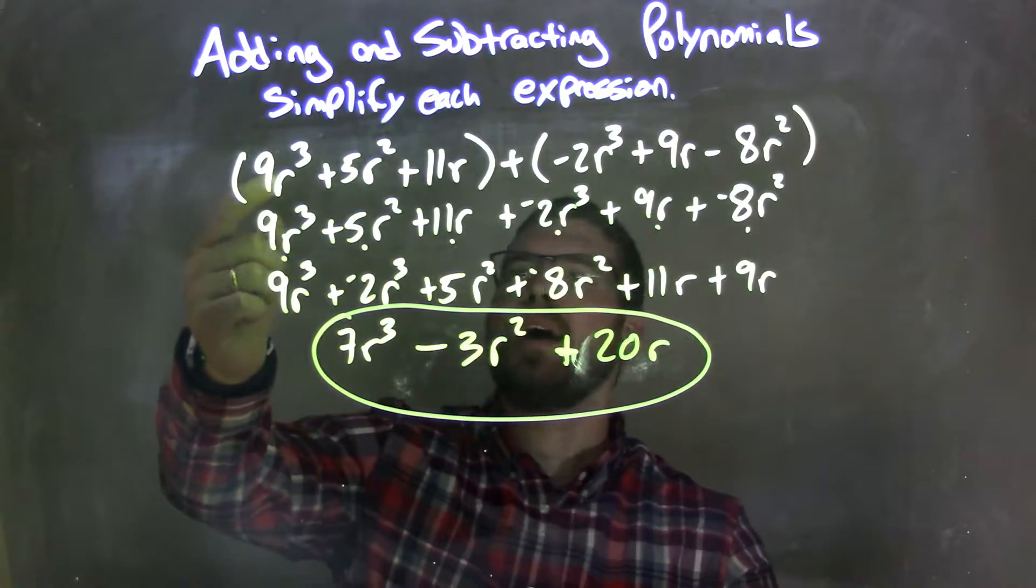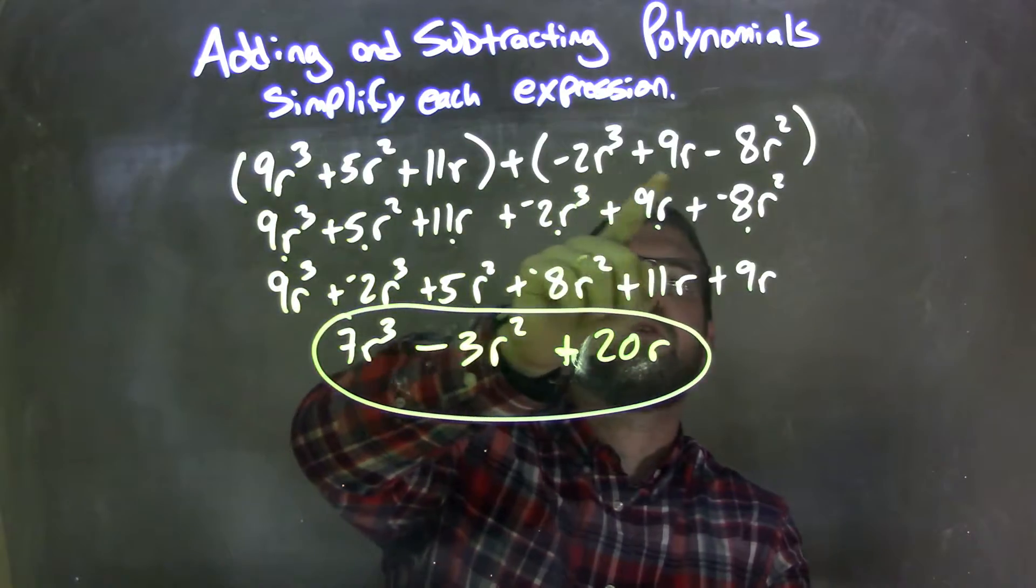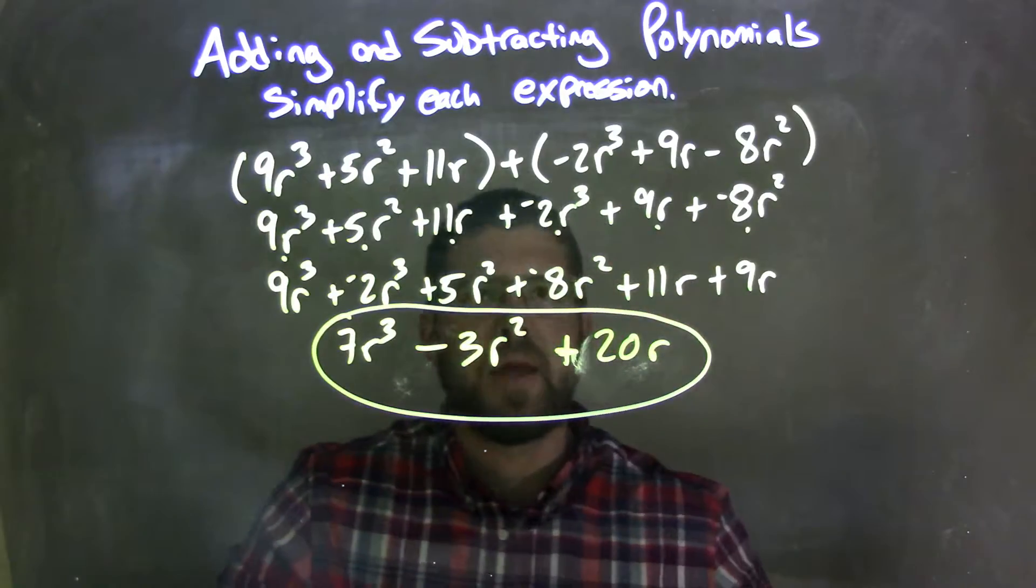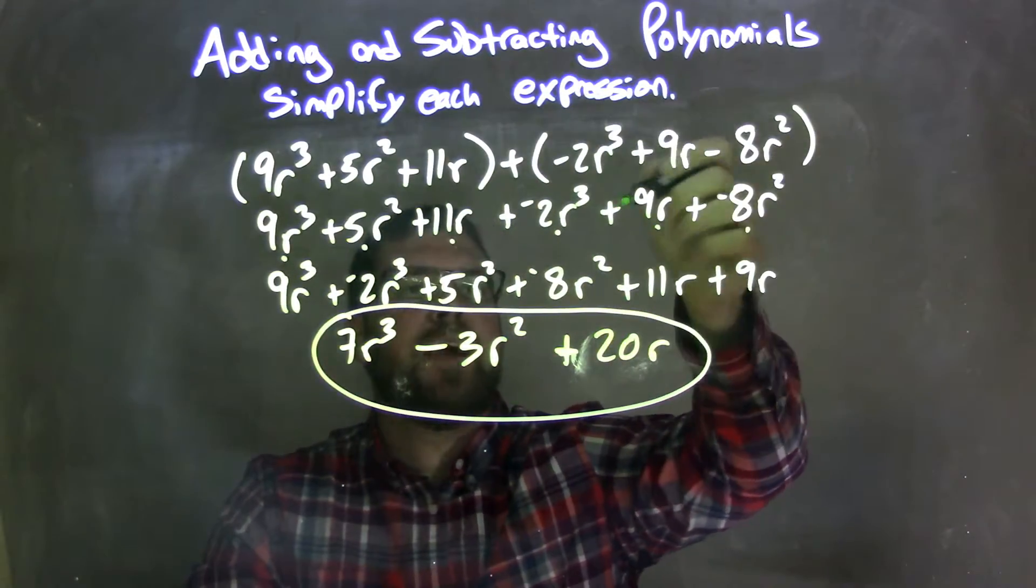So let's recap. We're given 9r³ plus 5r² plus 11r in parentheses, plus parentheses negative 2r³ plus 9r minus 8r². I distribute the plus sign across and eliminate the parentheses, and make everything plus a negative.